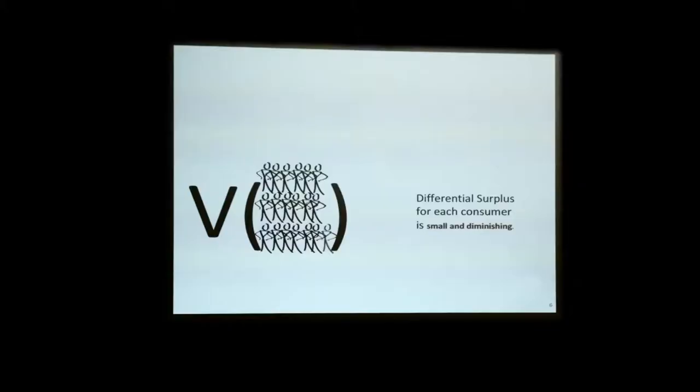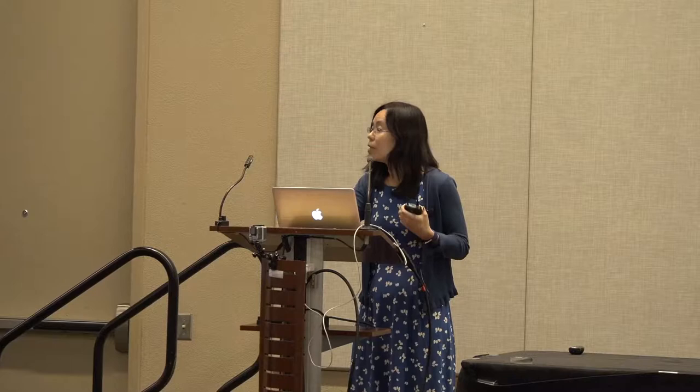What's really happening is that the value of a large data set is very large — this is the value the intermediary can extract from the firm. But what the intermediary needs to pay to the data holders is only their differential surplus. As the number of other people willing to contribute increases, that differential surplus is very small and diminishing. So the intermediary has the market power and gets most of the profit from the data transfer process. The simple model allows analysis of how much correlation in preferences is needed to make the intermediary profitable, and what's the optimal way for the intermediary to decide how much noise to add before transferring data to the firm.